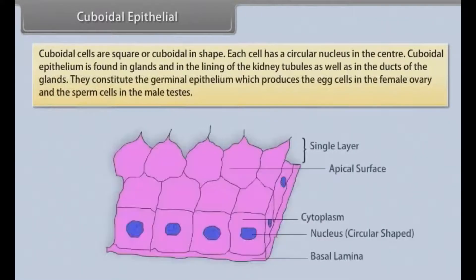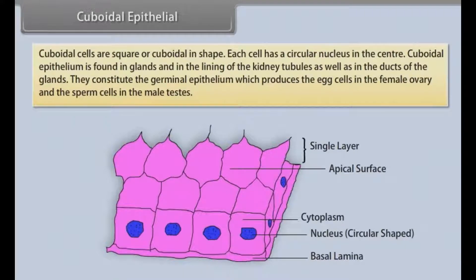Cuboidal epithelial cells are square or cuboidal in shape, and each cell has a circular nucleus in the center. Cuboidal epithelium is found in glands and in the lining of the kidney tubules as well as in the ducts of the glands. They constitute the germinal epithelium, which produces the egg cells in the female ovary and the sperm cells in the male testes.